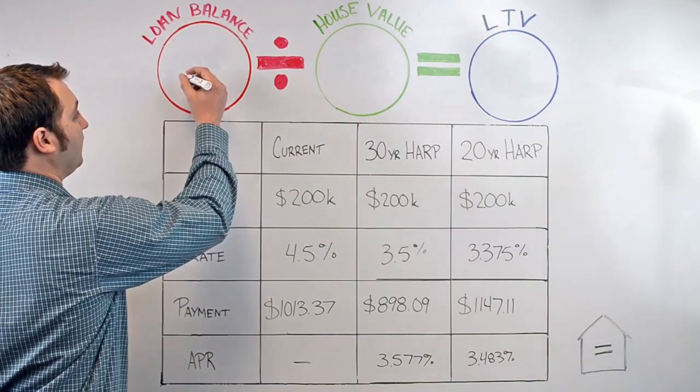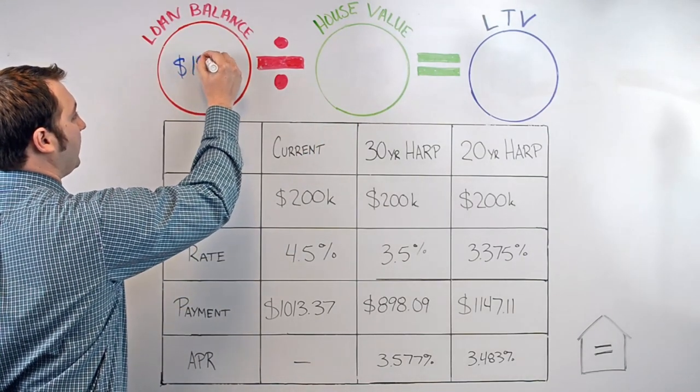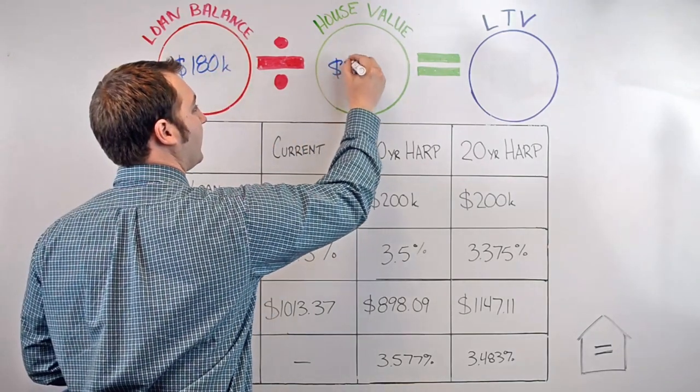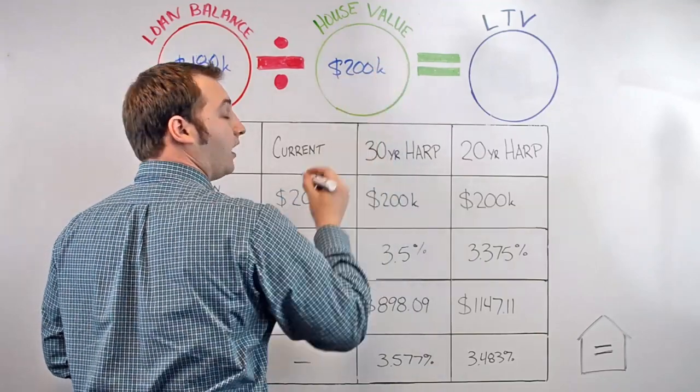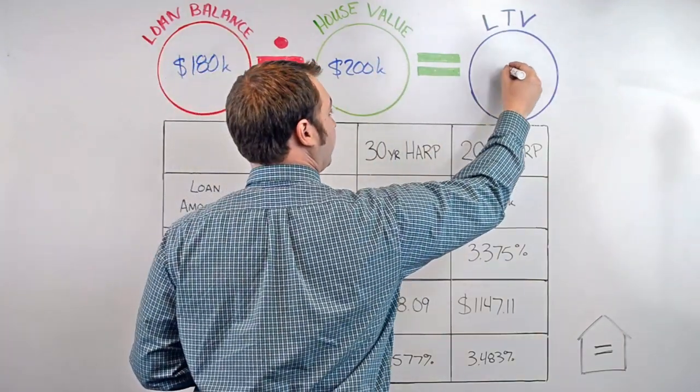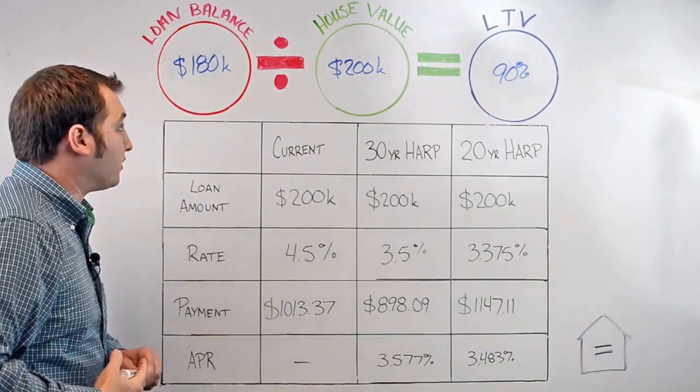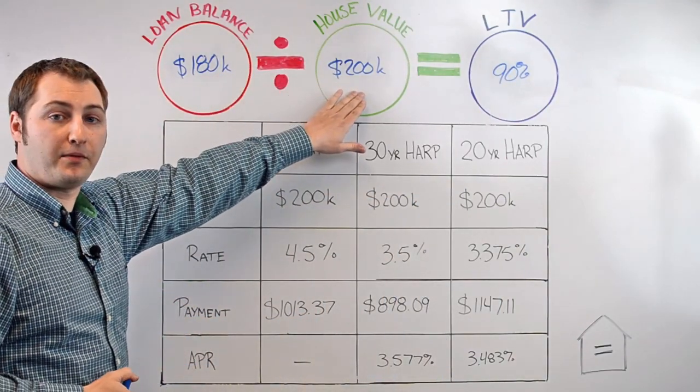So for example, if we have a loan amount of $180,000 and the value of the property is $200,000, our loan-to-value would be 90%. Traditional lending guidelines require that the loan amount be less than the value of the property.